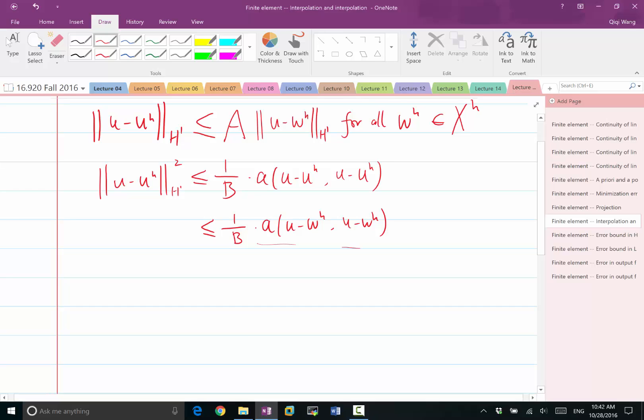And also, let's use the continuity of this bilinear form here. So by continuity, this is less than C times the norm of U minus WH.